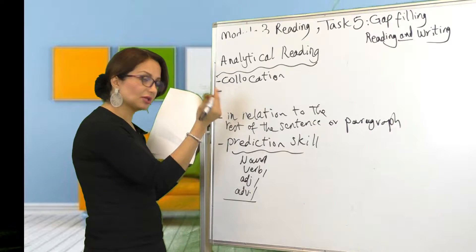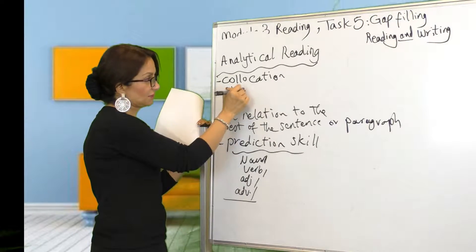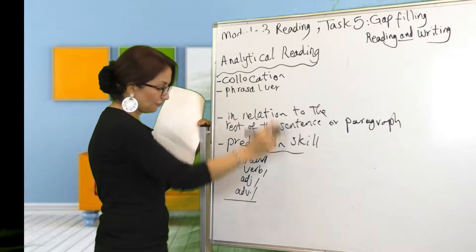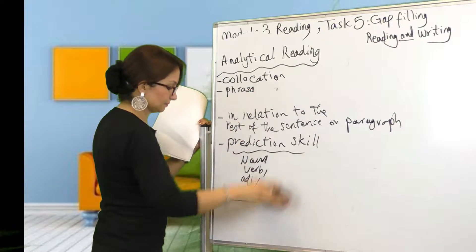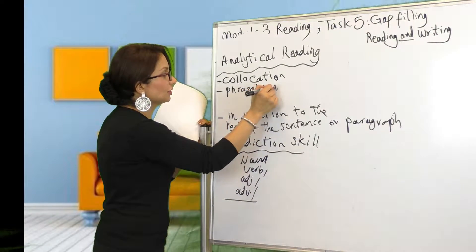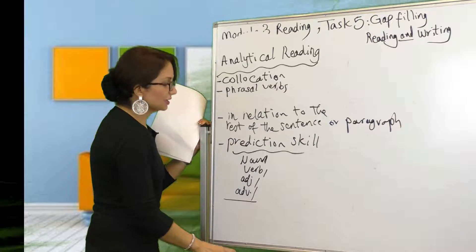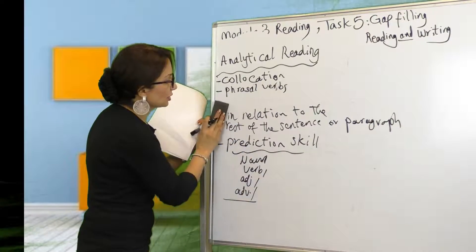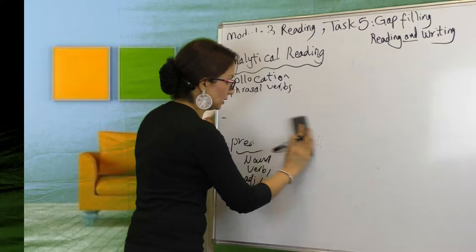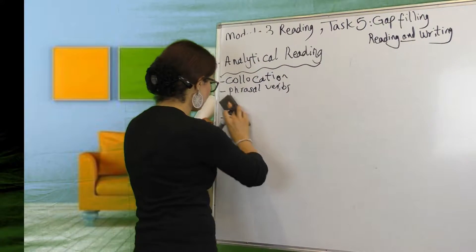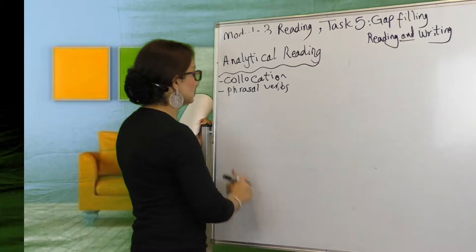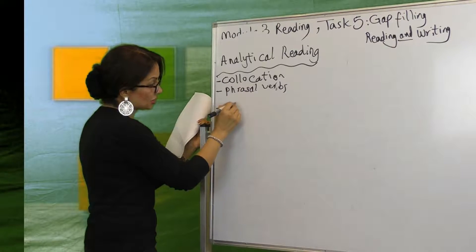If it is, let's say, for example, environment, how many collocations or phrasal verbs can you get? Phrasal verbs are another important part of this gap filling test. Phrasal verbs are the verbs that are made up of two to three words together and they make meaning, they make sense together.